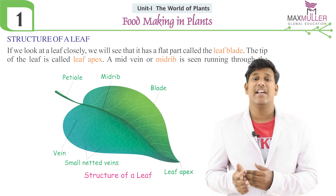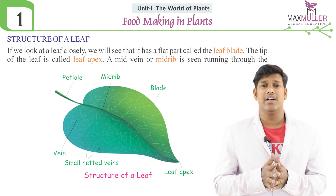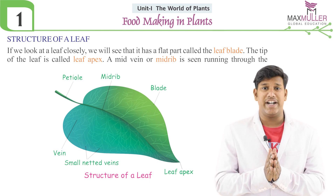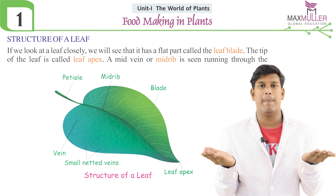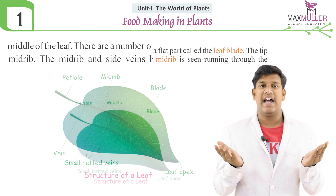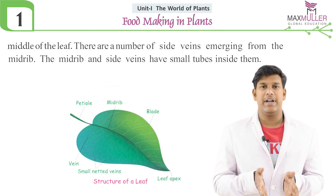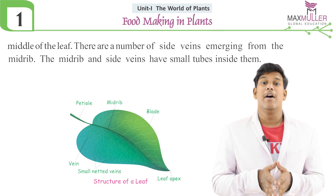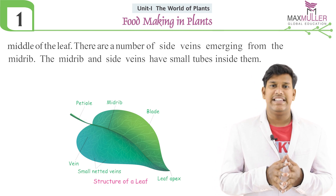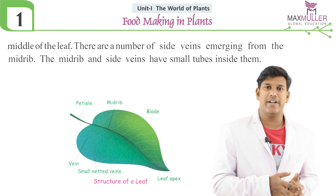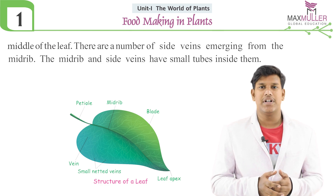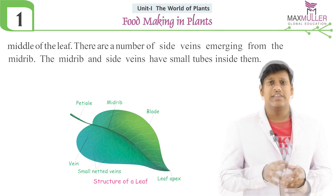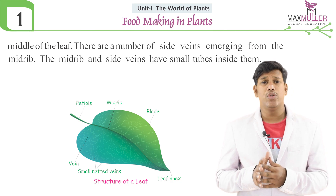The flat portion of the leaf is known as the leaf blade. The tip of the leaf is known as the leaf apex. At the center there is a midrib which divides the leaf into two parts, and within the midrib there are lateral structures known as leaf veins.